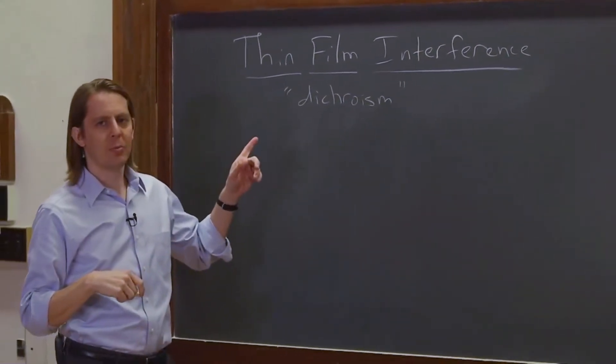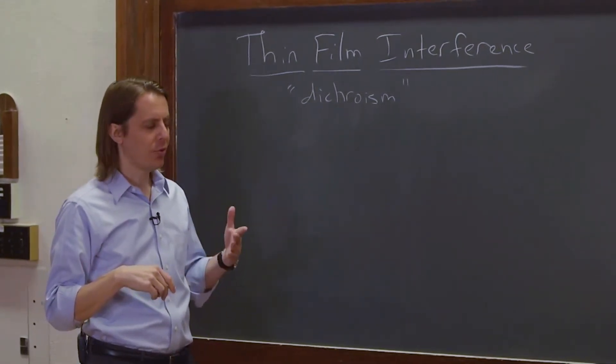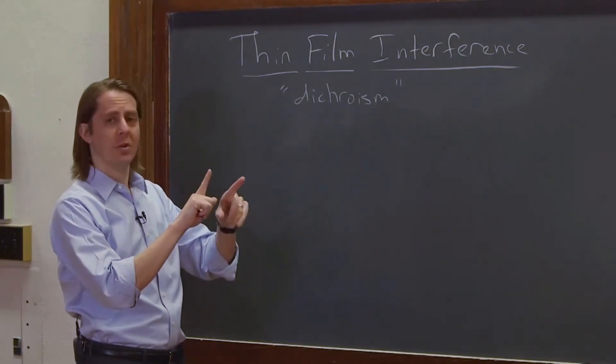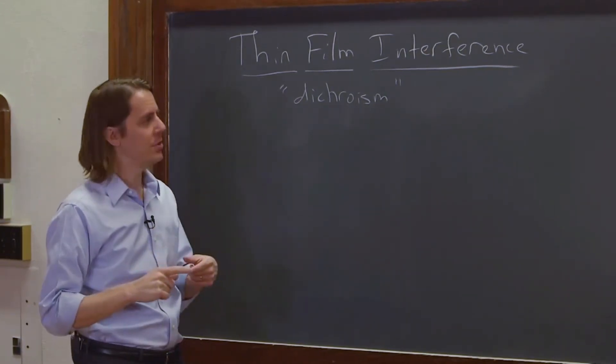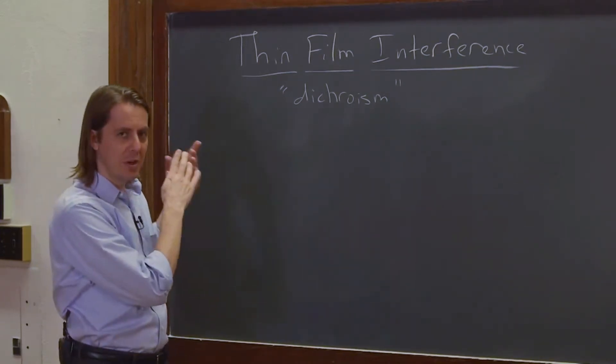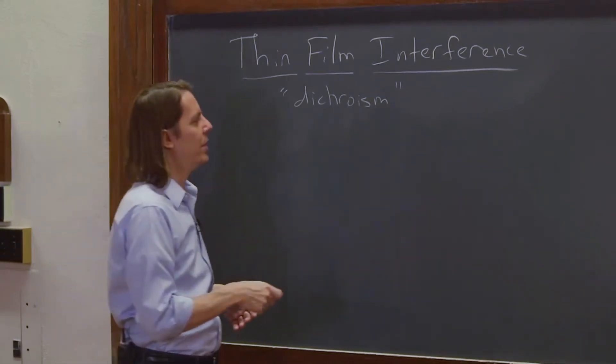You may remember the word dichroism from the learning sequence on polarization. We said dichroism was when you had anisotropy in absorption based on the direction of polarization of the light. But we said it had two meanings and the other had to do with color. So this is the other meaning. Anything that separates white light into colors is usually called dichroism.